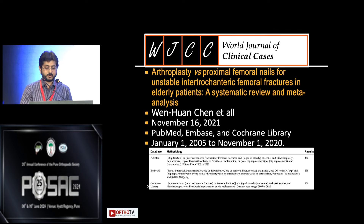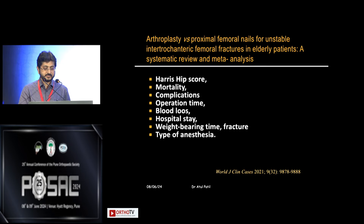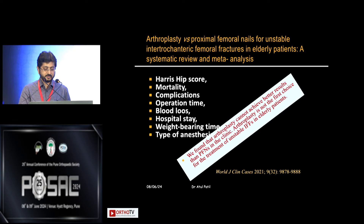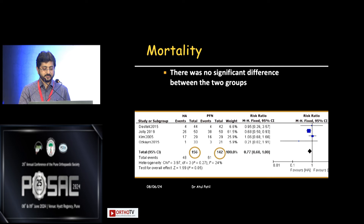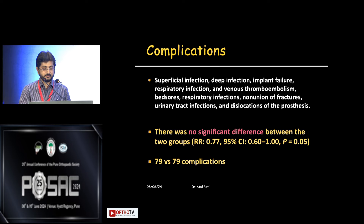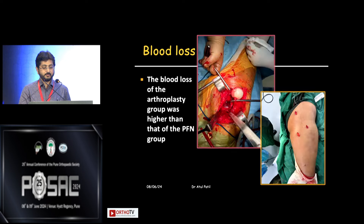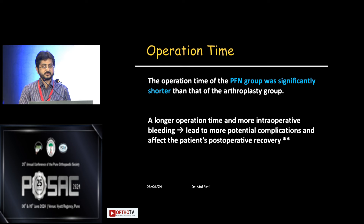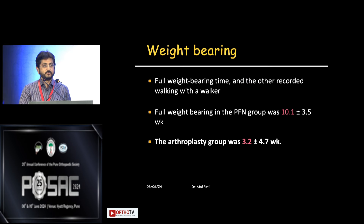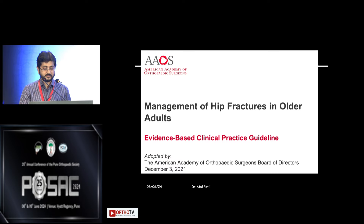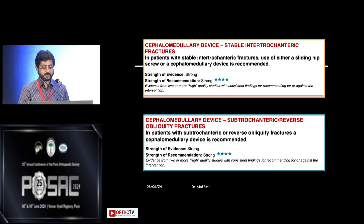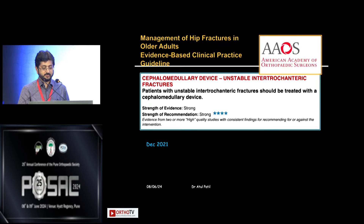A meta-analysis on arthroplasty versus proximal femoral nails evaluated Harris Hip Score, mortality, and other outcomes. The conclusion was that PFN fixation is better than replacement: mortality is less with fixation than hip replacement, there is no significant difference in other complications, blood loss is controllable with percutaneous fixation, operating time is less, and full weight bearing at 10 months versus replacement at one month. Evidence supports cephalomedullary nailing for stable intertrochanteric, subtrochanteric, and reverse fractures.